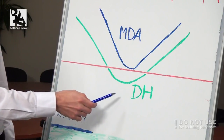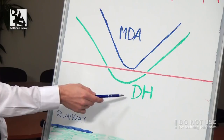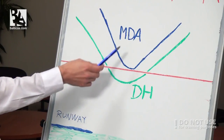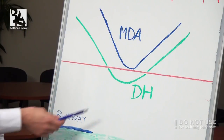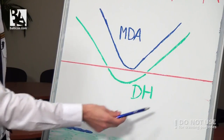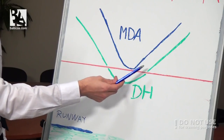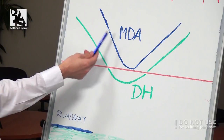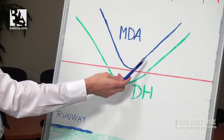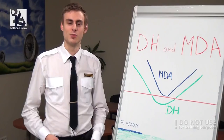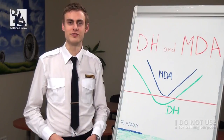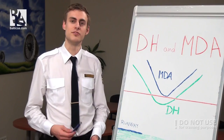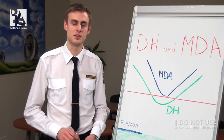Decision height is used in ILS precision approaches, while MDA, or minimum descent altitude, is used in non-precision approaches. When we are using decision height, we have to decide about a go-around or landing at that height, but if we have minimum descent altitude, we have to decide before. When we fly category 2 and 3, we will use the radio altimeter for decision height, but when we are flying category 1, we will use the barometric.